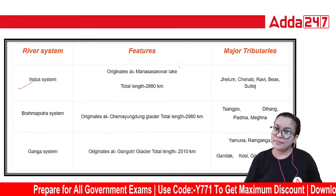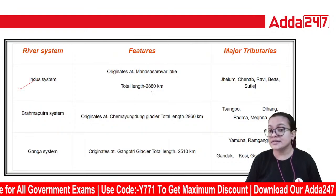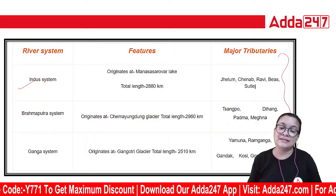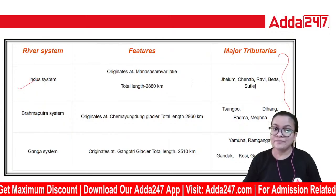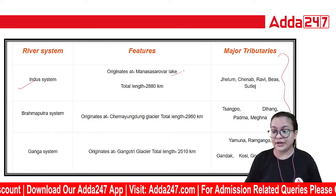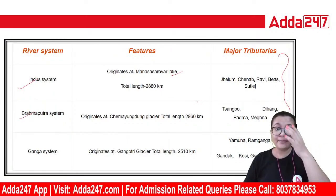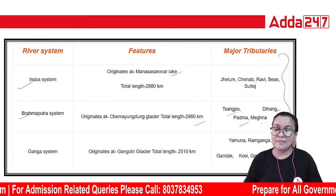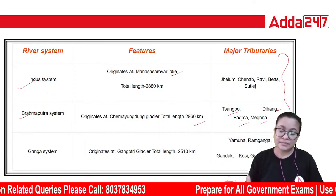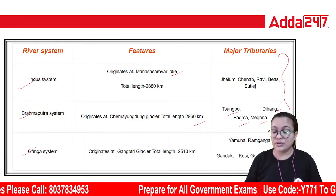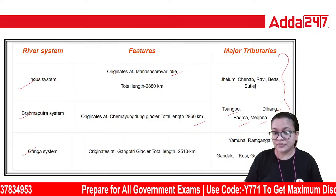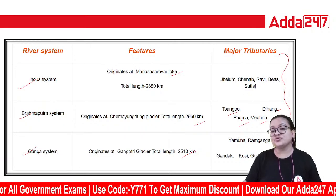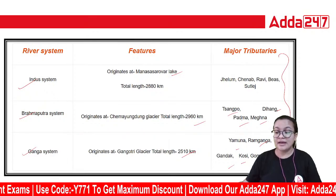The Indus river system originates from Mansarovar Lake with a total length of 2,880 km. The Brahmaputra river system originates from Chemayungdung Glacier with a total length of 2,960 km; its major tributaries include Dehang, Padma, and Meghna. The Ganga river system originates at Gangotri Glacier with a total length of 2,510 km; its major tributaries include Yamuna, Ramganga, Gandak, Koshi, Gomti, and Damodar.